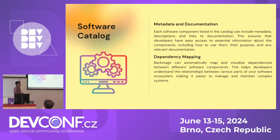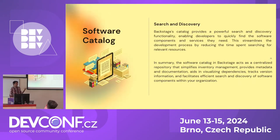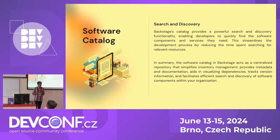The software catalog provides unified inventory management and transparency across the organization. You can store all metadata for your service — API docs, CI/CD configurations, specific components, labels, and dependency mapping. For example, if you have a Webhook service with a server-side event consumer, or Kafka consumers and producers, you can map all those dependencies.